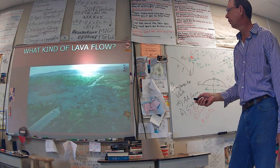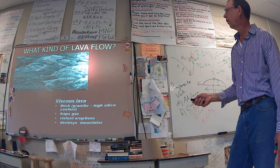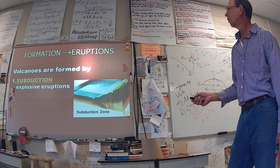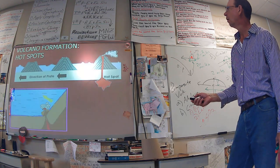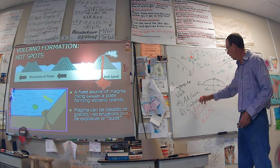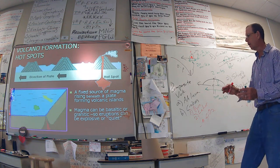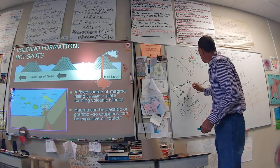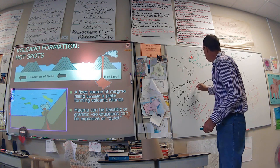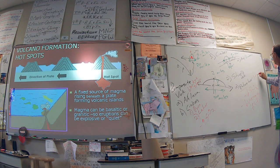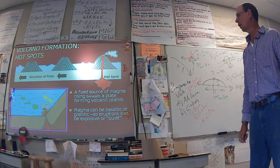Aa lava — it hurts your feet when you walk around it because it has so much glass in it. It's usually blocky and will actually cut your boots. So: blocky and sharp. Pahoehoe lava is very smooth — it's not sharp at all. And I think that covers everything with volcanoes.